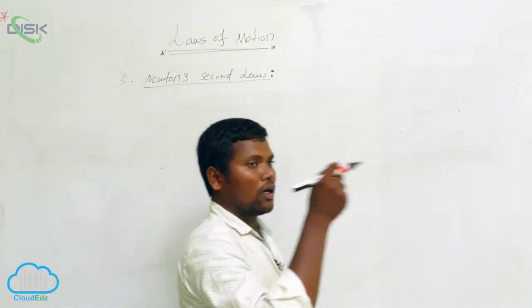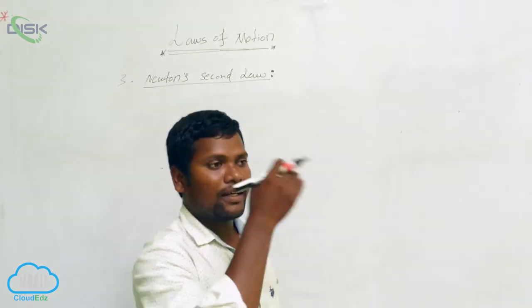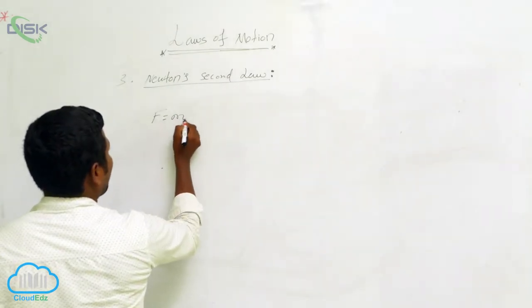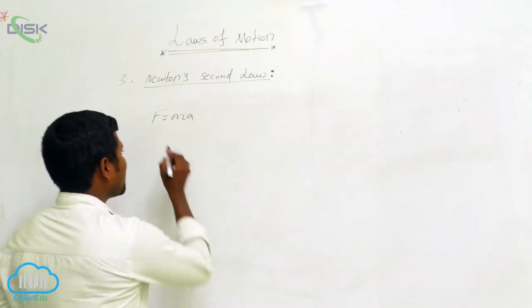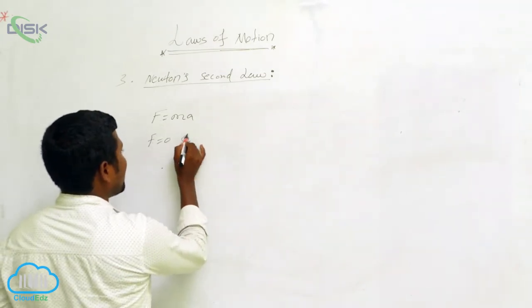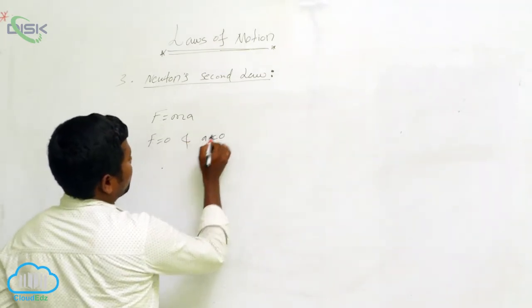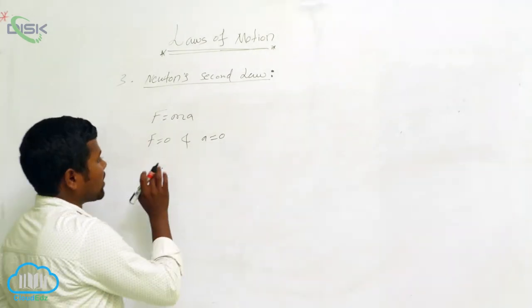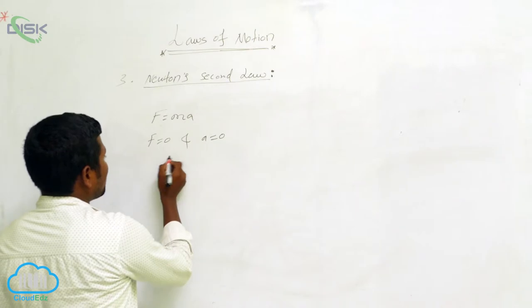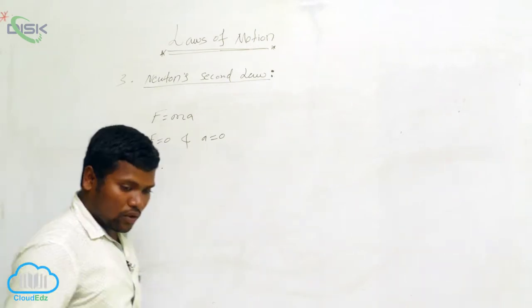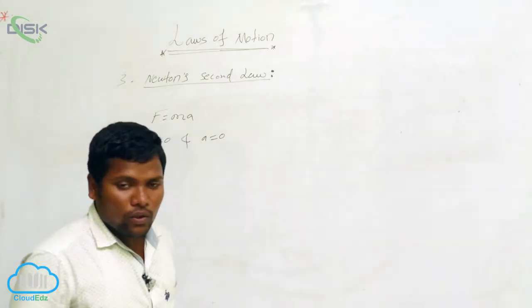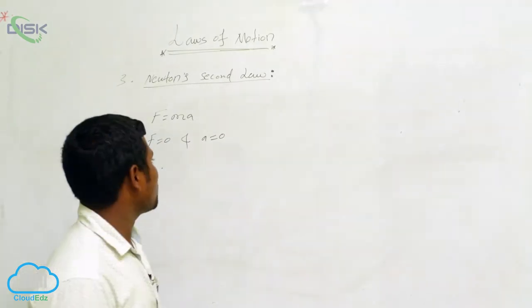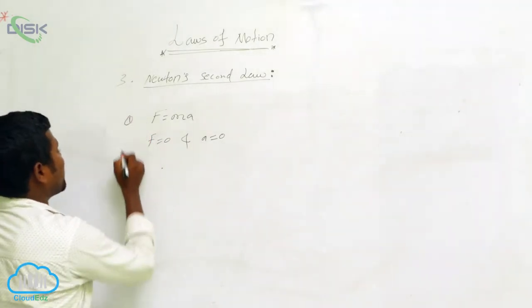If you release the thread, the object will go off in different directions. Using F = ma: if F = 0, then a = 0 automatically. This means if force is zero, acceleration is also zero — and that corresponds to Newton's First Law.